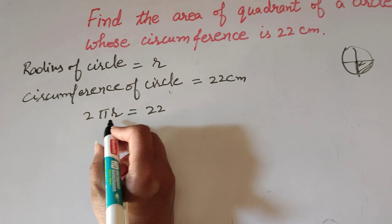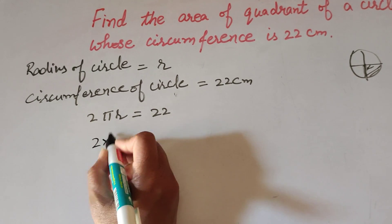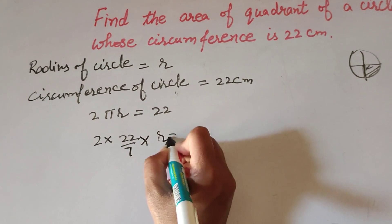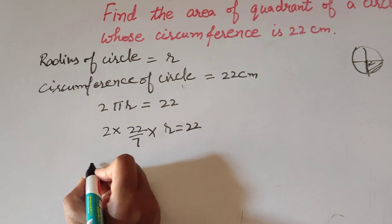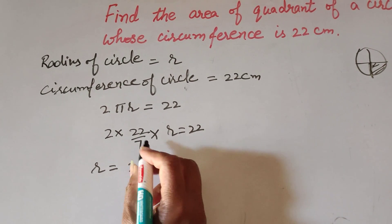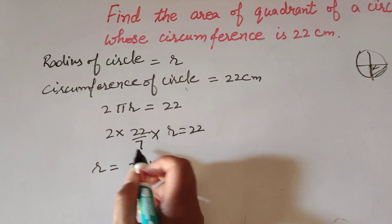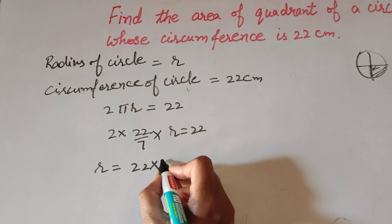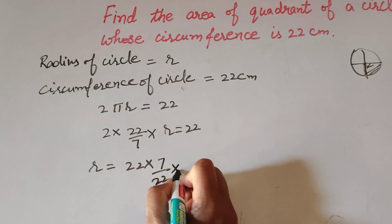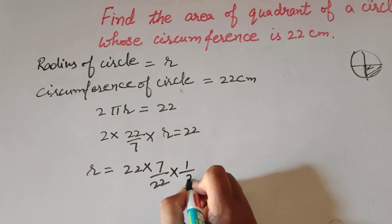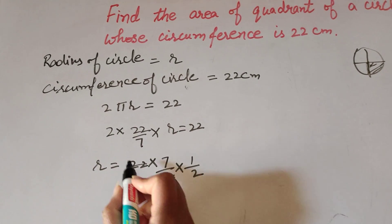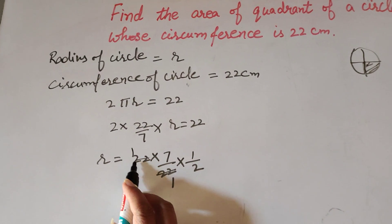So in this, r is the radius we have to find. 2 multiplied by π, whose value is 22/7, multiplied by r equals 22. So r equals 22 multiplied by 7/22 multiplied by 1/2. Since 22 in the numerator and 22 in the denominator cancel out, we get r = 7/2.